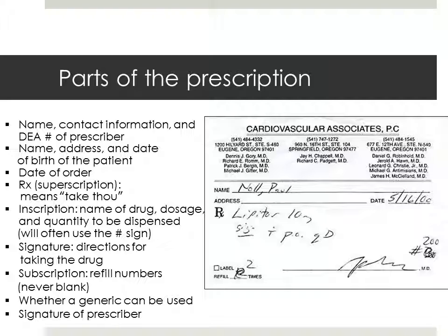All prescriptions need the following information. Note that this example is an old prescription so some of the information isn't provided. We have the name, contact number, and DEA number of the prescriber. A DEA number is a registration number assigned to a health care provider by the U.S. Drug Enforcement Administration and allows them to write prescriptions for controlled substances. This number must be pre-printed on the prescription form. Then there's the name, address, date of birth of the patient, and the date of order. The letter Rx is called the superscription and that means 'take thou.' The inscription part gives the name of the drug, the dosage, and the quantity to be dispensed.